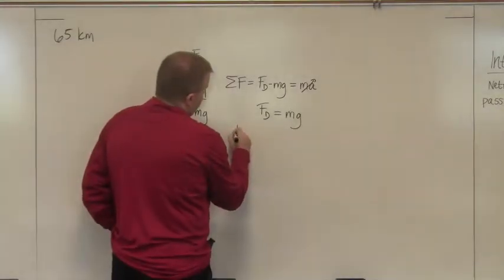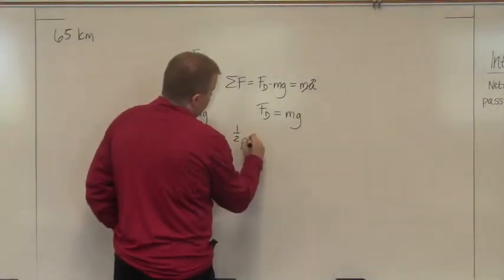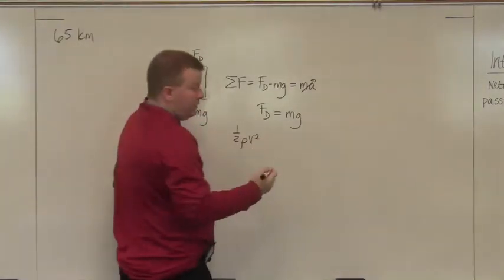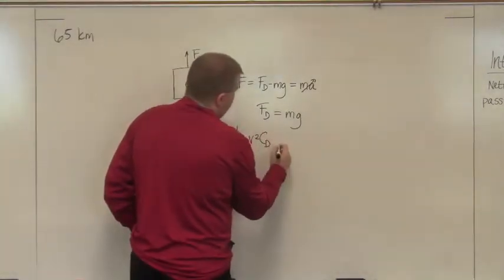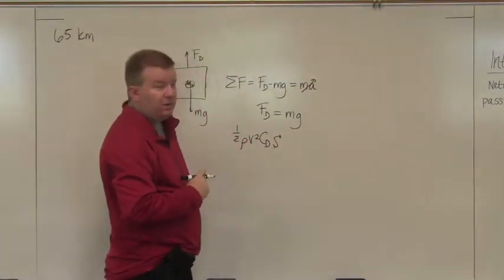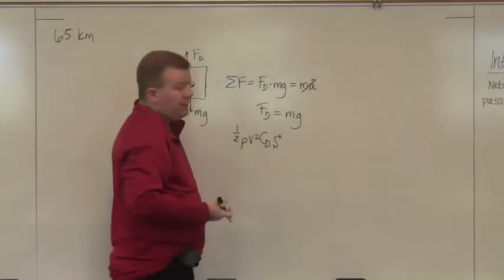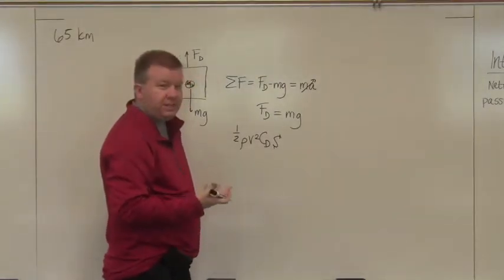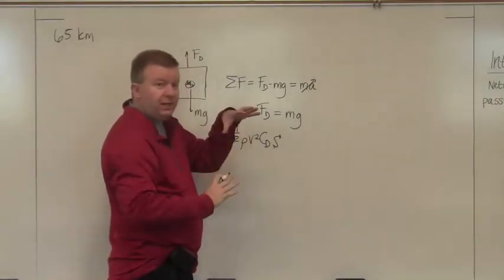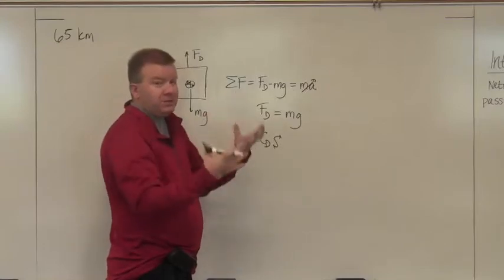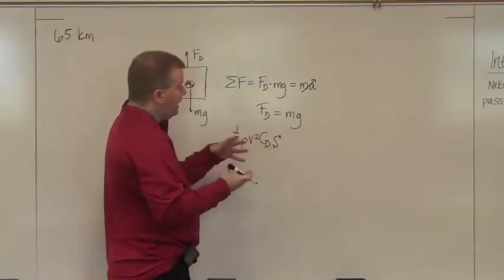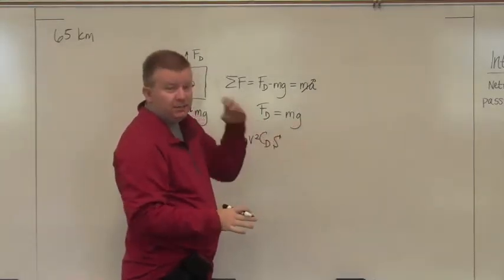Drag is basically the equation: one half times the density of the fluid that you're in, times the velocity squared, times some drag coefficient, times some plan form area S. That is the area that the fluid sees. Like on a sphere, what the fluid sees is really just a circle. It's not the surface area of the entire body, it's just the biggest area that it sees.